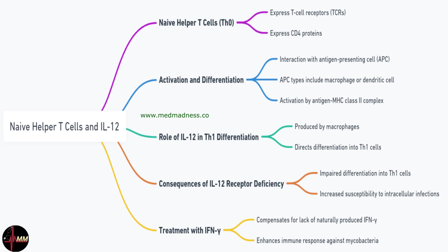When a naive T cell interacts with an antigen-MHC class II complex on an antigen-presenting cell, such as a macrophage or dendritic cell, it gets activated. But the type of cytokine the APC produces at this stage determines the fate of the T cell.